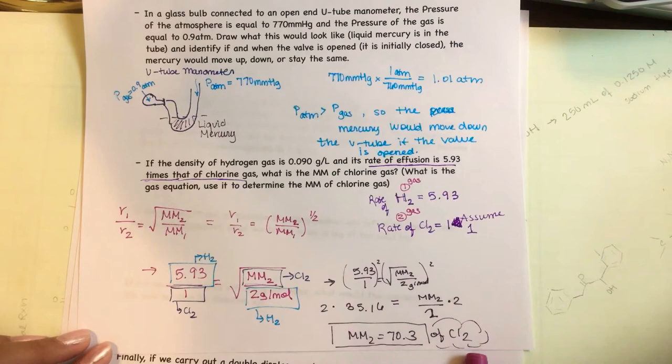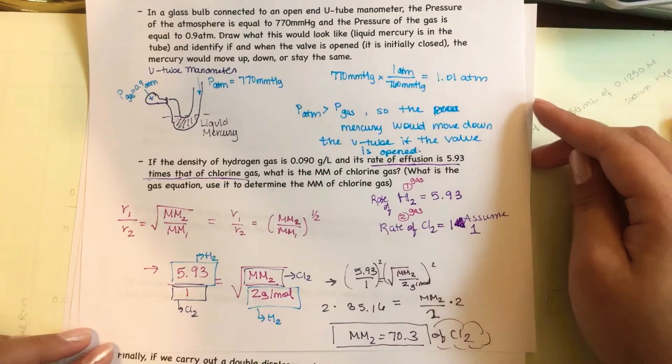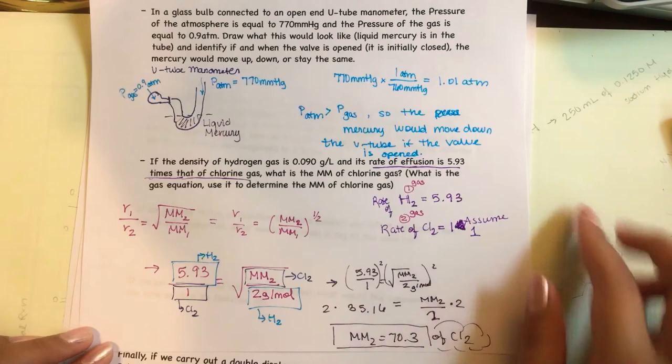As a reminder, chlorine gas is Cl2, similar to hydrogen gas which is H2. We were able to check it's 70.3 grams per mole.